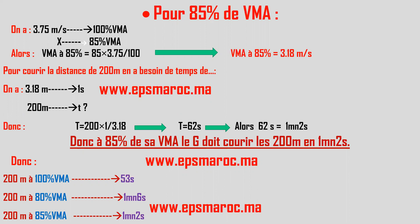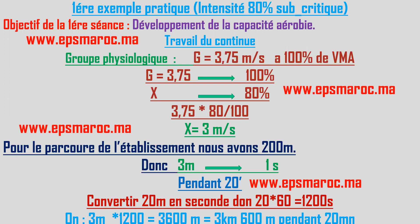Pour résumer les résultats : courir 200 mètres à 100% de VMA nécessite 53 secondes ; à 80% de VMA, 1 minute et 6 secondes ; à 85% de VMA, 1 minute et 2 secondes. Le mode de travail utilisable pour développer la capacité aérobique est le mode continu.